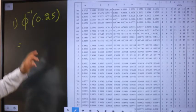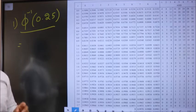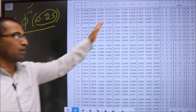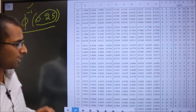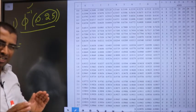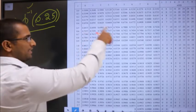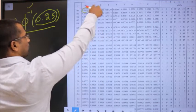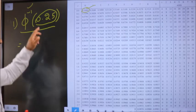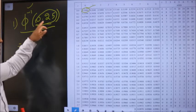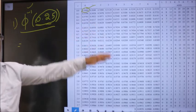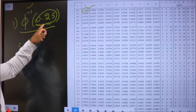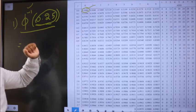I want to find out Φ⁻¹(0.25). Since it's inverse, I should look for 0.25 in the table. The difficulty arises because this table starts from 0.5 — all other values are beyond 0.5 — but I am looking for 0.25, which is smaller than 0.5, so I won't find that number here. What I need to do is make 0.25 greater than 0.5.